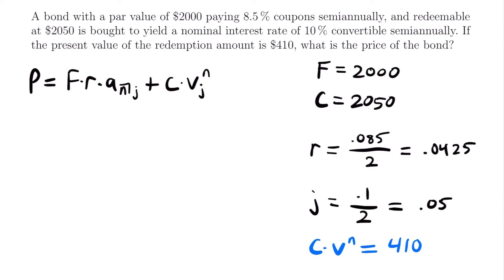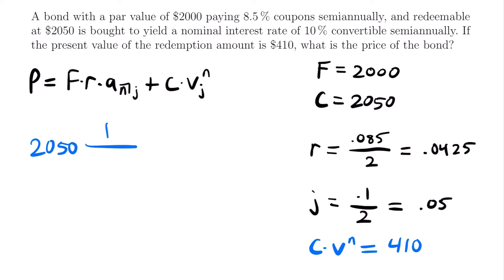We have everything about this bond except the number of coupon periods n — we weren't told the number of years. We need to use the present value of the redemption amount to find n. Since C equals 2,050, we have 2,050 times (1 divided by 1.05^n) equals 410. We want to solve for n. Multiplying both sides by 1.05^n gives 2,050 equals 410 times 1.05^n. Dividing both sides by 410, we get 5 equals 1.05^n.